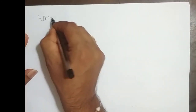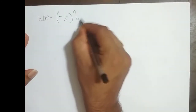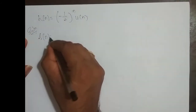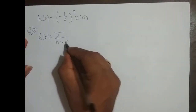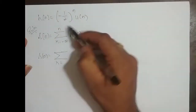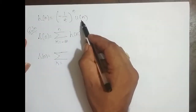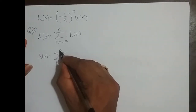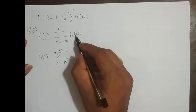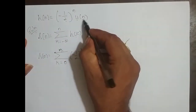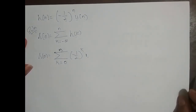We will take up one more. Let the impulse response h of n equal minus 1 by 2 power n times u of n. So S of n is equal to summation k varying from minus infinity to n of h of k. Since I have u of n, this signal starts from 0, so the sum runs from 0 to n. And h of k is minus 1 by 2 power k, with u of k equal to 1 over the range.